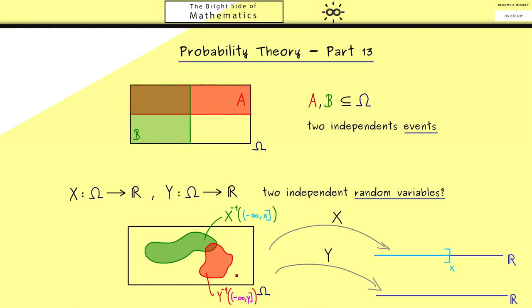The good thing is that for real-valued random variables, it turns out that this sigma algebra can be generated by just looking at these half-sided intervals. Of course, we have to look at the pre-images of all these intervals here, but still it makes our life a little bit easier.